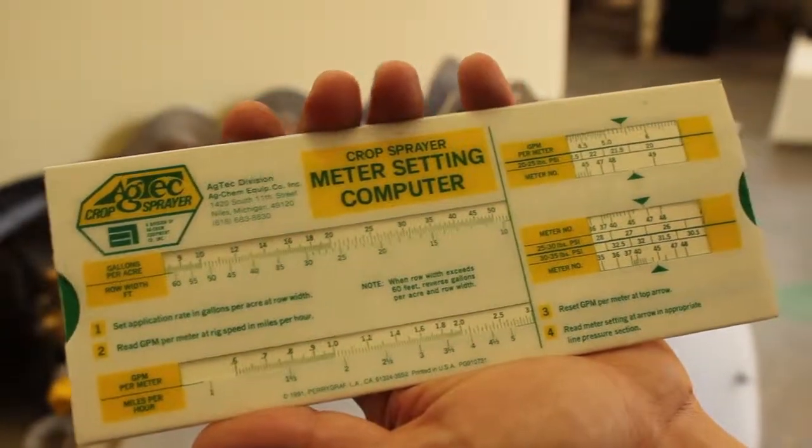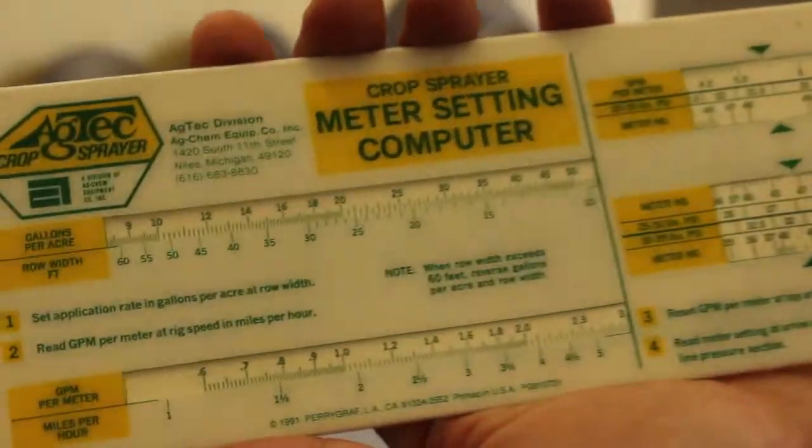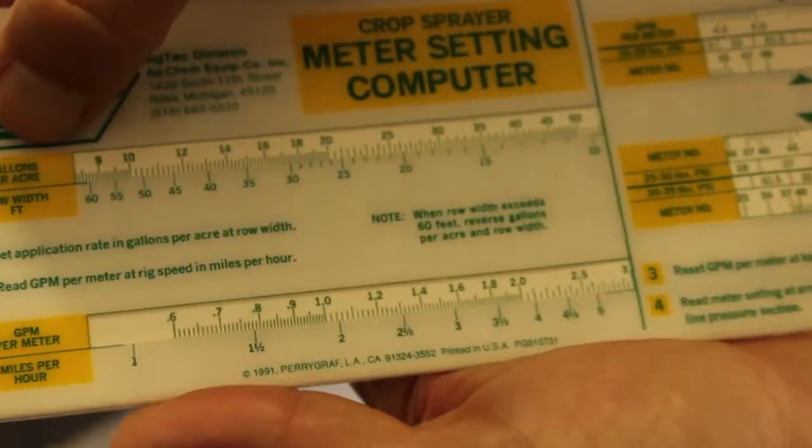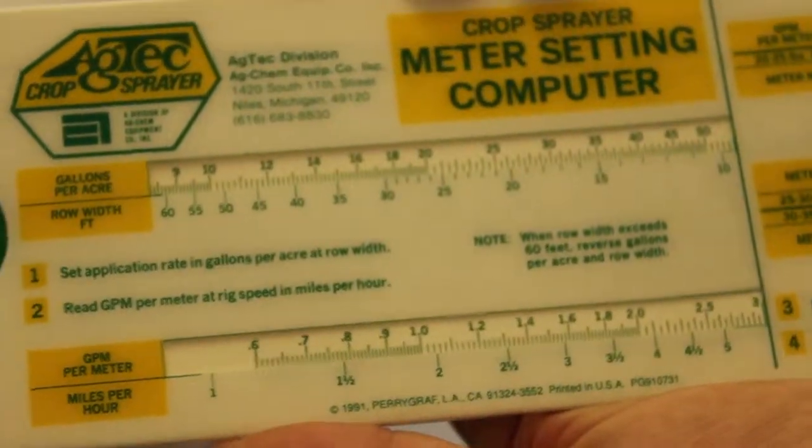Okay, this is how we calibrate an AgTech sprayer. First of all, we need to know our desired gallons per acre. So for the sake of argument, let's say we want to do 30 gallons per acre.